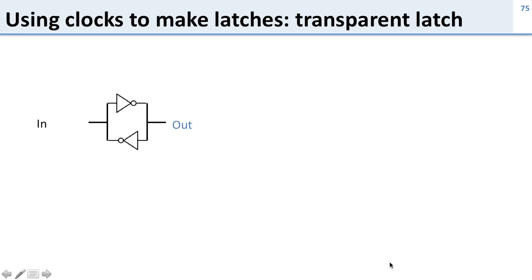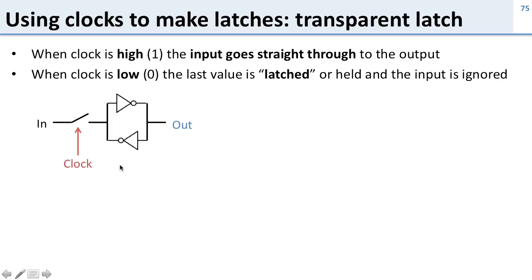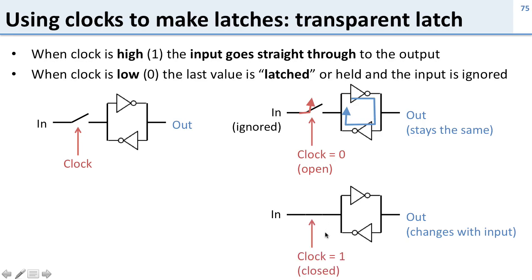So how do we use clocks with this circuit? What we'll talk about now is called a transparent latch — it's transparent because things can go right through it, and not really in a good way. Here's our SRAM cell that stores a value, with a switch on the input controlled by the clock. This gives us a state element controlled by the clock. When the clock is high, the input goes right through; when the clock is low, the last value is held. When the clock is low the switch is open, so whatever value was stored before is the output and new inputs are ignored. When the clock is high the switch is closed, the new input overrides the stored value and changes the output. So by using the clock to control the switch, we've made a latch that only updates when the clock is high.